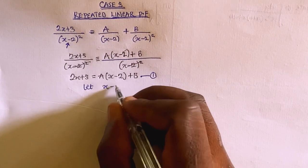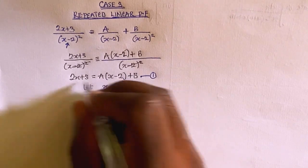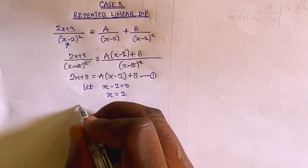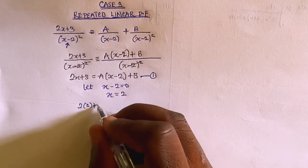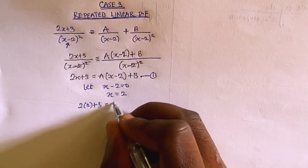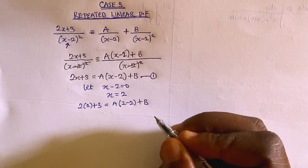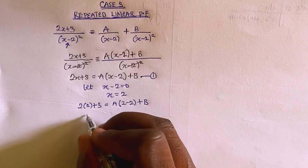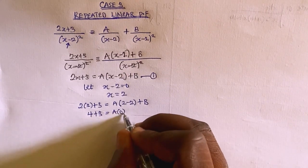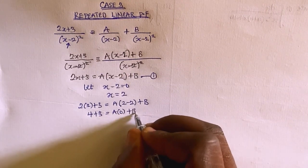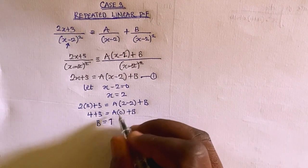Using the substitution method, we select x minus 2 equals 0, so x equals 2. Substituting x equals 2 into equation 1: 2 times 2 plus 3 equals A times (2 minus 2) plus B. So 4 plus 3 equals A times 0 plus B. Therefore B equals 7.